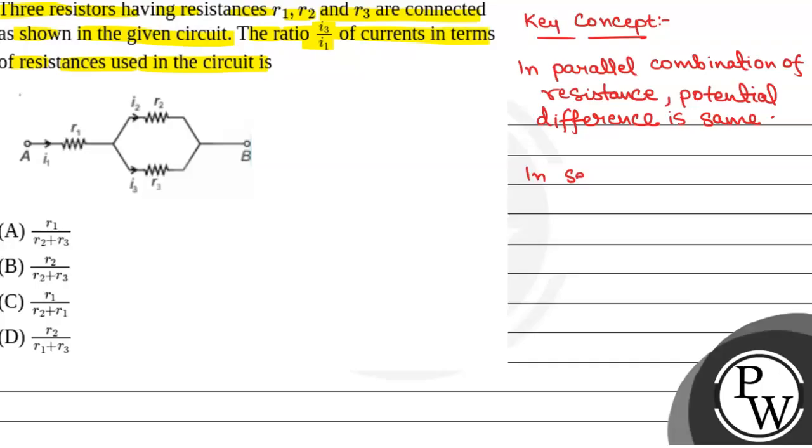And in series combination, current in the circuit, current flowing in the circuit is same.